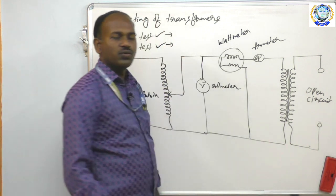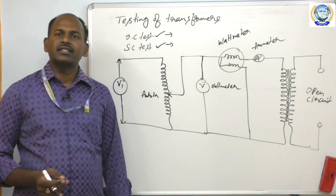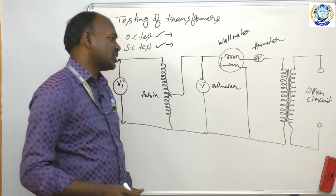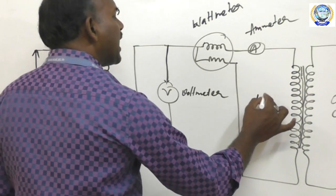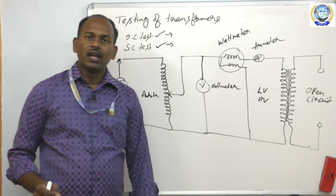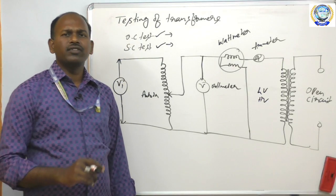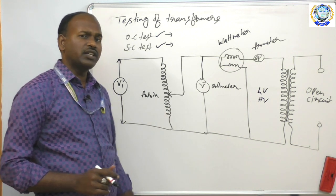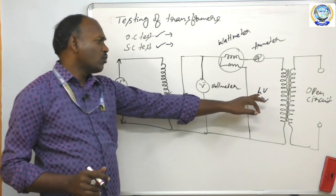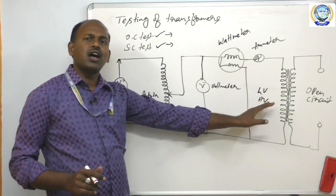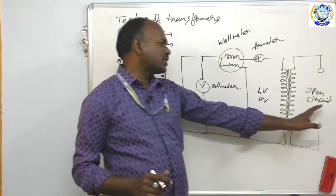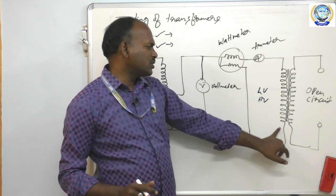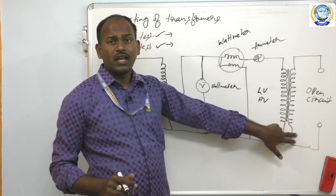You have two sets of windings — primary and secondary. At the time of testing, you must consider the LV side and HV side of the transformer. For convenience, most of the time meters are connected on the low voltage side and the high voltage side is open-circuited. That is the reason the number of turns is drawn equal here.